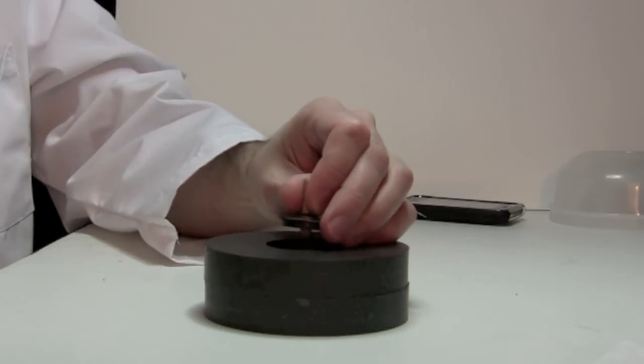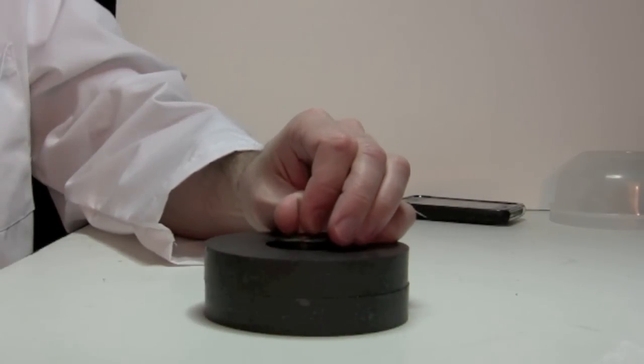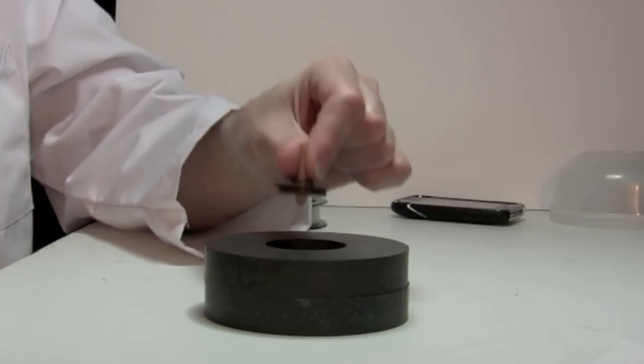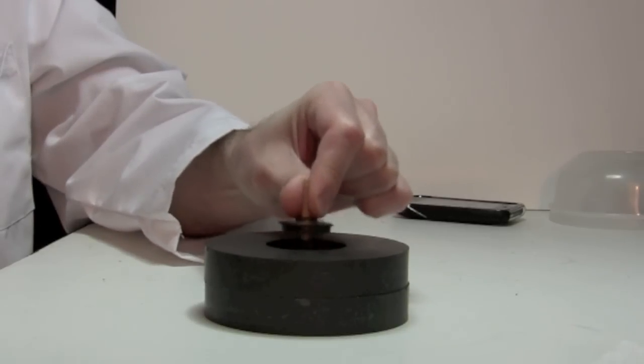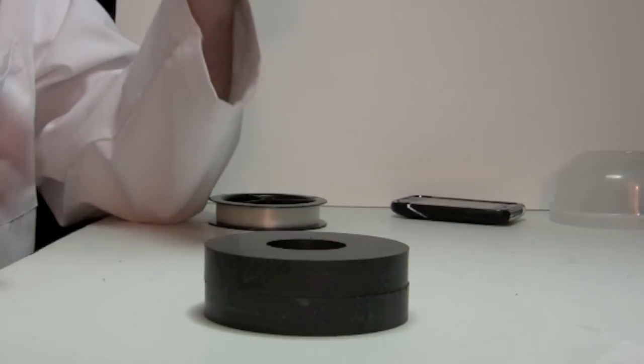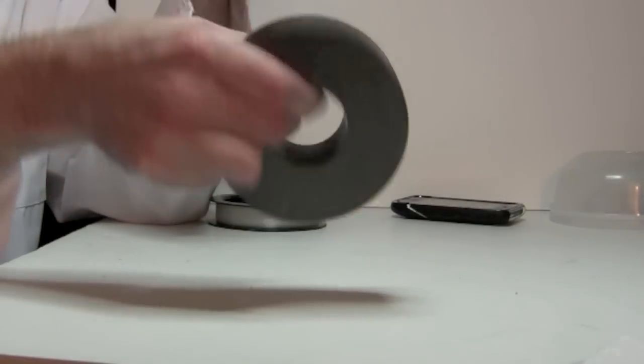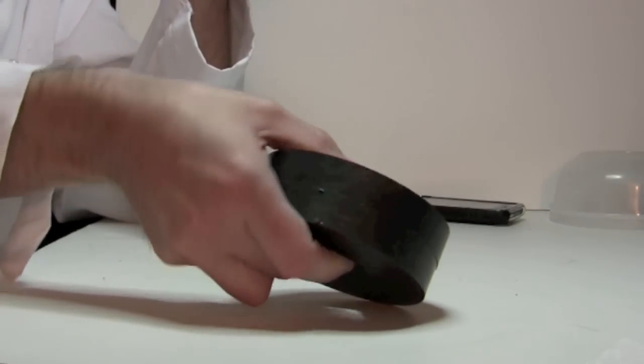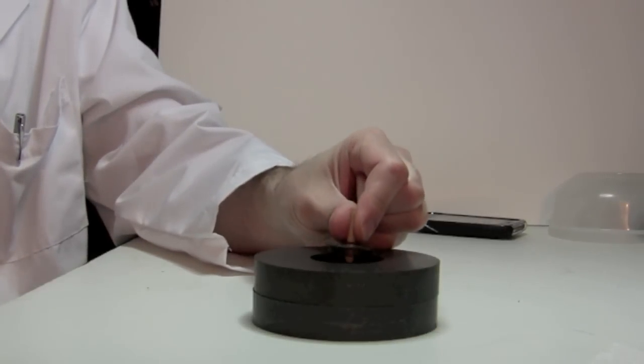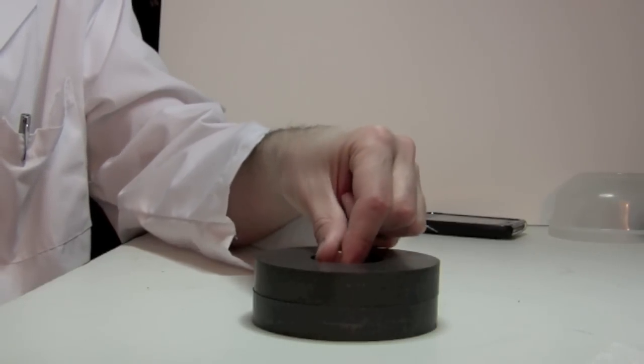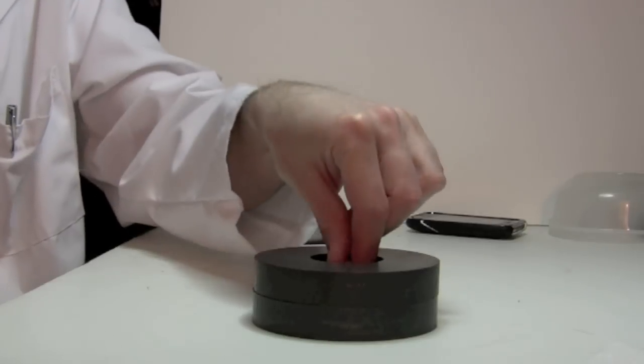First of all, make sure the two magnets are oriented properly. Take the small magnet and approach the large one from top. If you initially feel nothing and then the small magnet like hits an invisible pillow, that's wrong and you need to turn the big magnet upside down. When oriented the right way, the big magnet should initially repel the small one and then pull it inside.